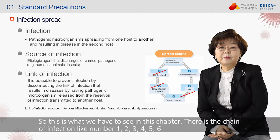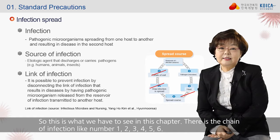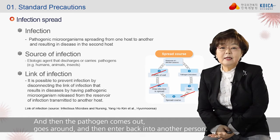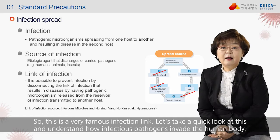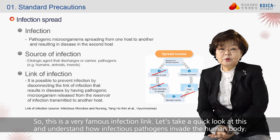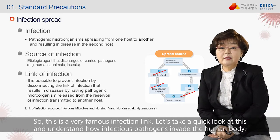This is what we have to see in this chapter. There is a chain of infection with six links. A pathogen comes out, goes around, and then enters another person. This is a very famous infection link. Let's take a quick look and understand how infectious pathogens invade the human body.